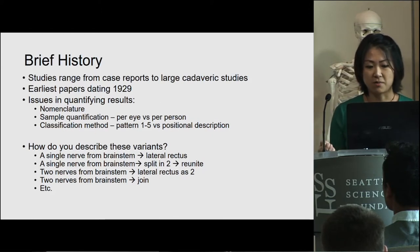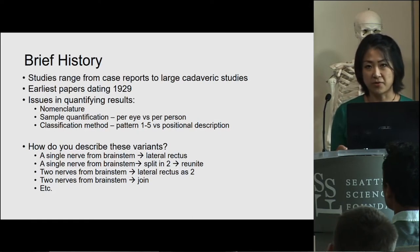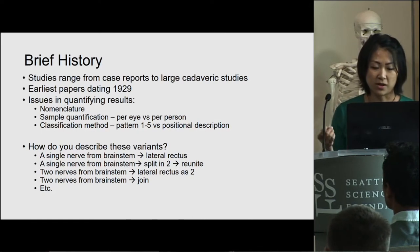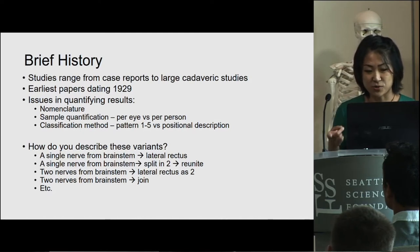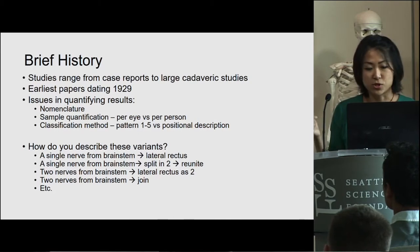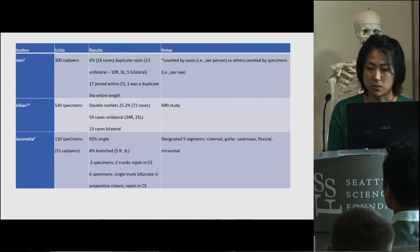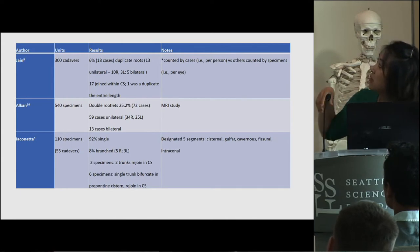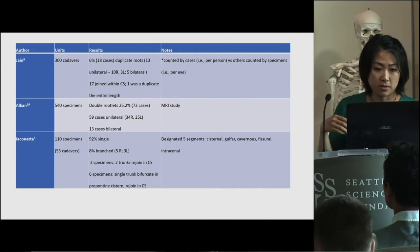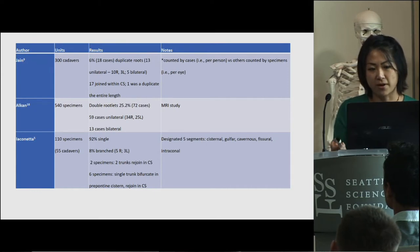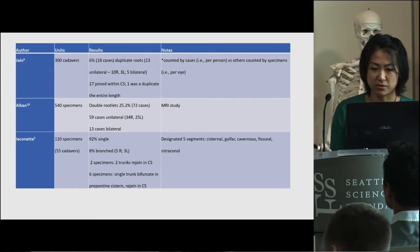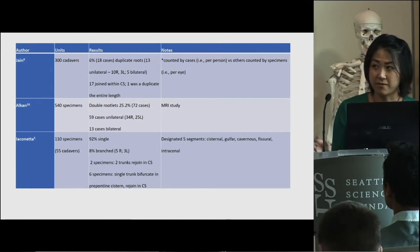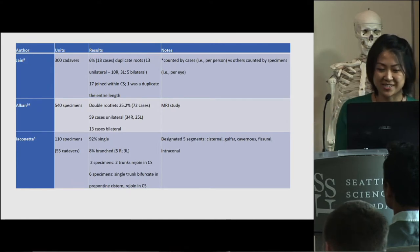The issue is how to describe these variants when there are so many possibilities. You can have a single nerve coming from the brainstem, then splitting and reuniting. Or you can have two completely separate nerve roots coming from the brainstem, traveling separately or joining at some point. In this study, I went through all the existing studies and made a table of the different units they used, the results they found, and any additional relevant notes. For the sake of time, I'll go through one or two of the studies.